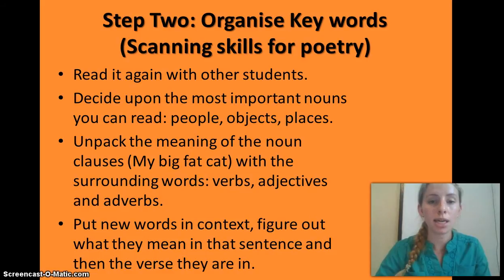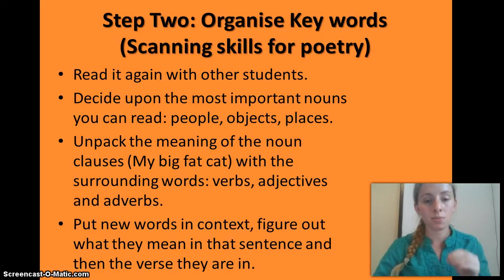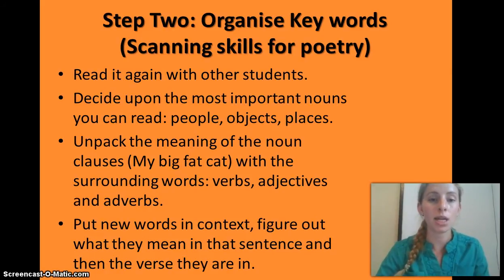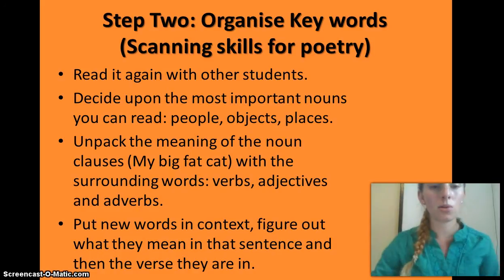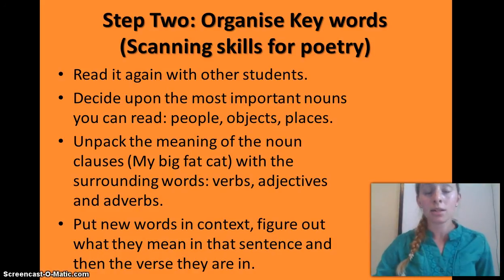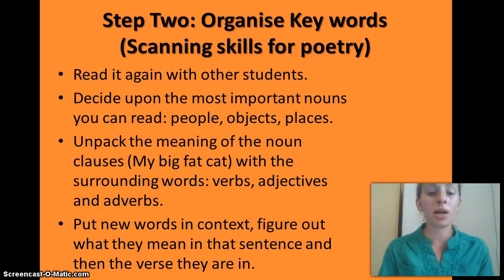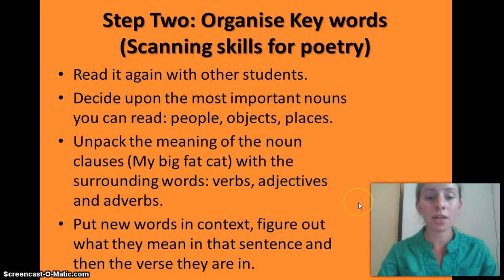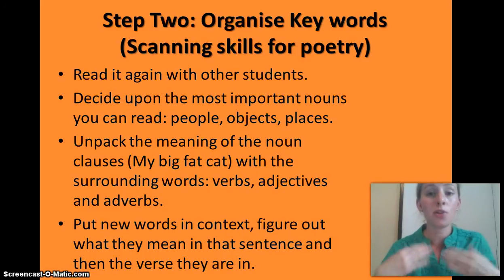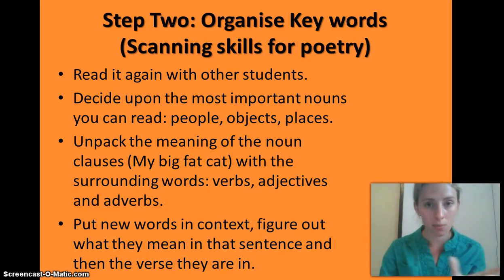The next step is to organise key words — like scanning skills for poetry. You're analysing specific words and things that seem important. Read it again with other students and decide upon the most important nouns: people, objects, and places. Unpack the meaning of the noun clauses — a noun clause could be something like 'my big fat cat.' You analyse the noun clauses with surrounding words like adjectives, verbs, and adverbs. Then put the words into context — figure out what they mean in that sentence and then in the verse.